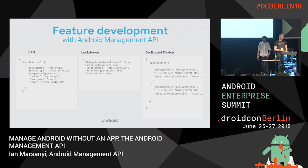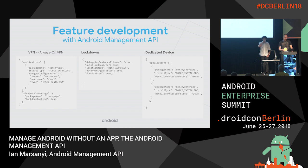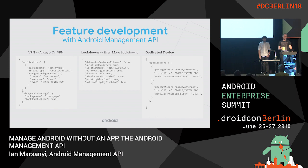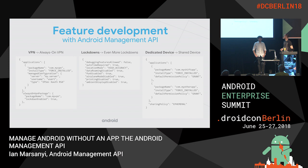This is how typical feature development looks with the Android Management API. On the left, there's a policy example with a VPN app configured. If you want to enable always-on VPN, you just add three lines. In the center example, you may have a kiosk device configured with serial lockdown functionality, and when Android P comes out with more features like that, you add three lines of policy code. On the right, you've got a dedicated device, and in Android P we're introducing shared devices functionality with a public session concept — familiar to those who know Chrome OS. Just add those lines, and you've got yourself a public session kiosk.